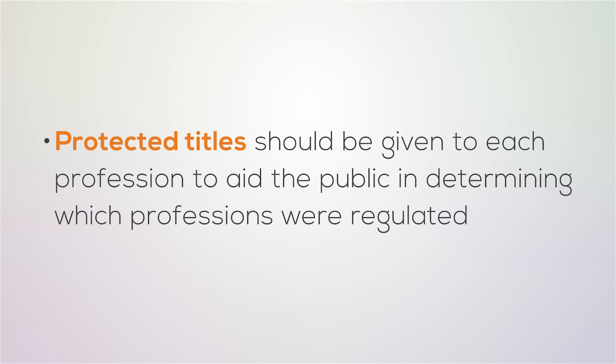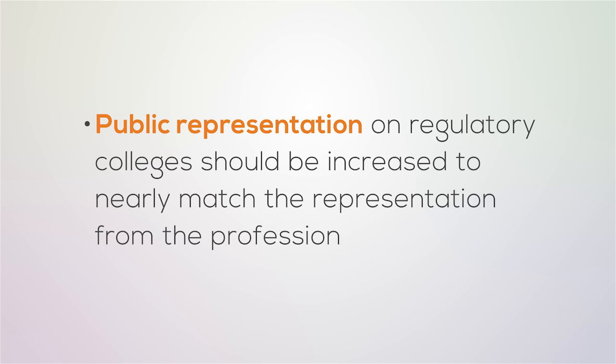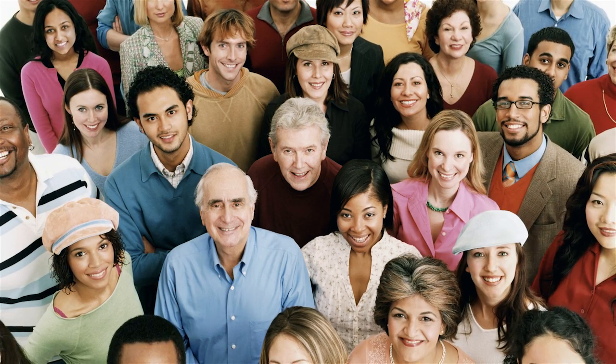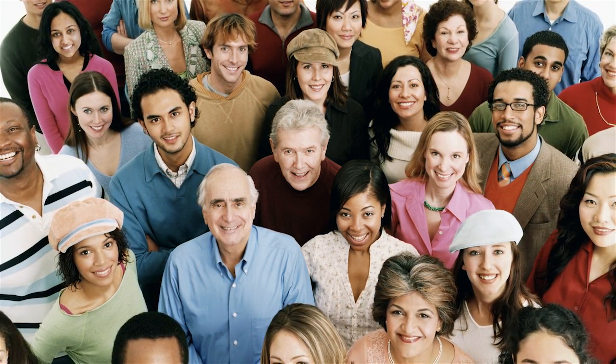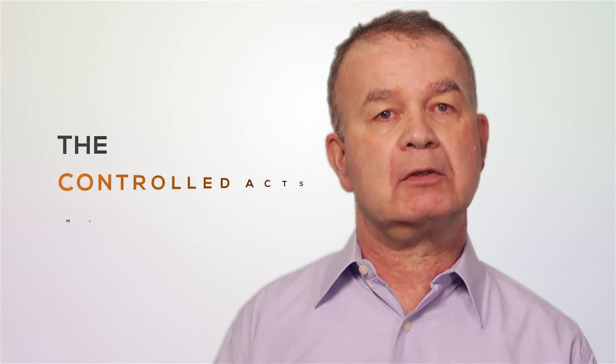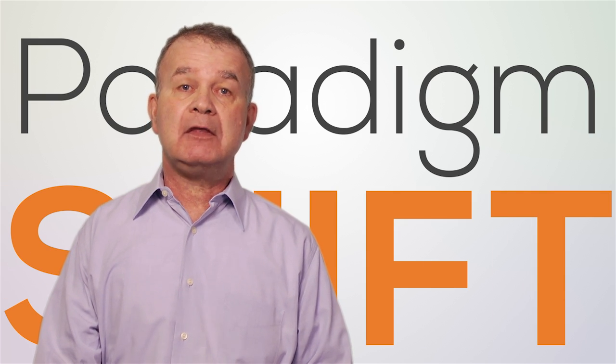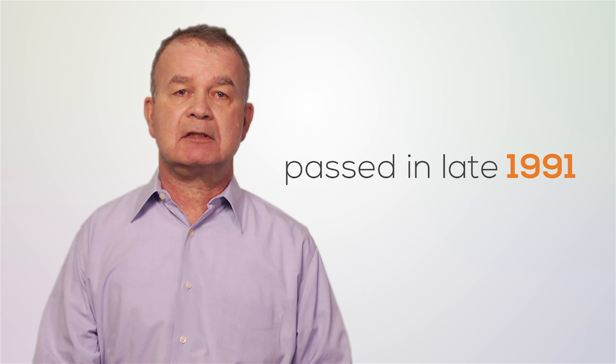Protected titles should be given to each profession to aid the public in determining which professions were regulated, and public representation on regulatory colleges should be increased to nearly match the representation from the profession. The most innovative component of the recommendations was the introduction of the Controlled Acts Model. The Controlled Acts Model would identify the activities that place the public at risk and control who is permitted to perform those activities by authorizing only those with the appropriate training to do them. No jurisdiction had ever before used such a model, so proposing it was a complete paradigm shift in professional regulation. These, and other less controversial recommendations, formed the basis for the Regulated Health Professions Act, which was passed in late 1991.